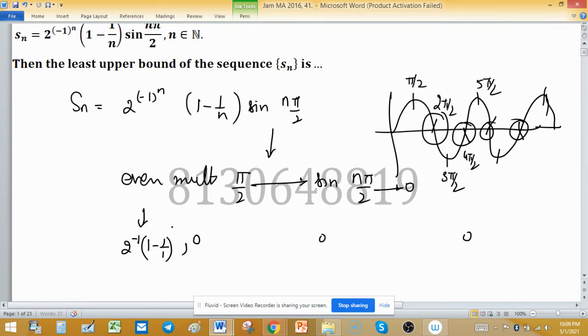This is the second term. So the third term will be 2 raised to the power -1 times (1 minus 1/3) times sin(3π/2). The value of sin(3π/2) is -1, so a negative appears here. The value of the fourth term is 0.